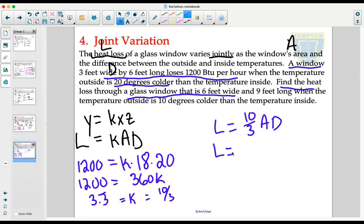So heat loss is going to stay as our variable. We know 10 thirds as the representation for K. The area of the window as a six by nine window is 54 square feet, and they tell us that the temperature difference has dropped to 10.